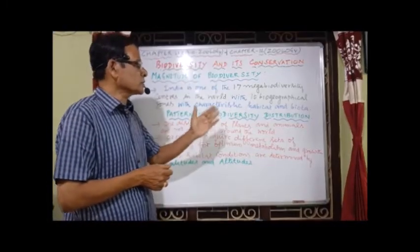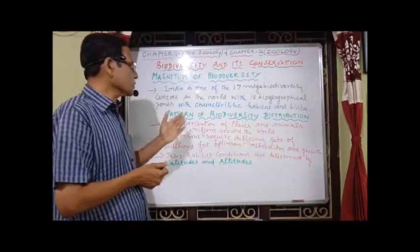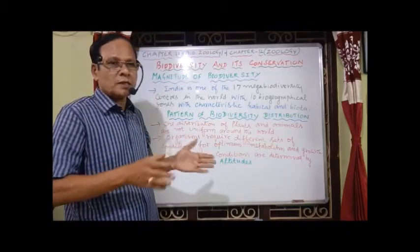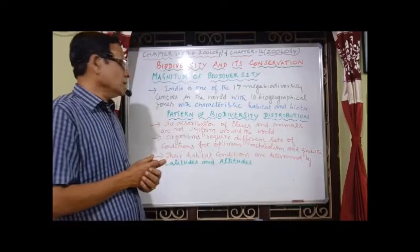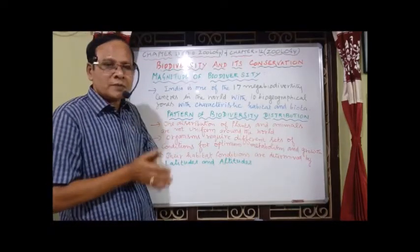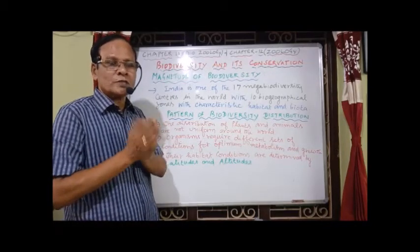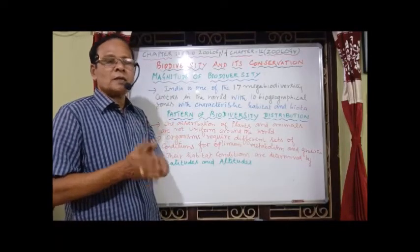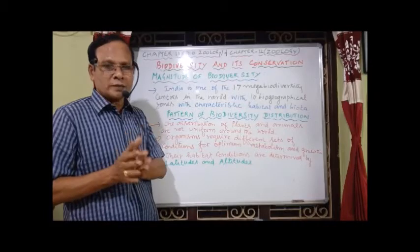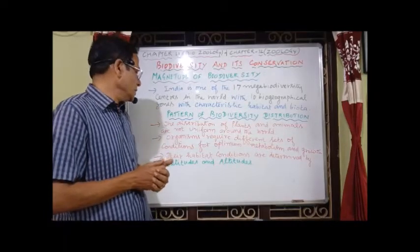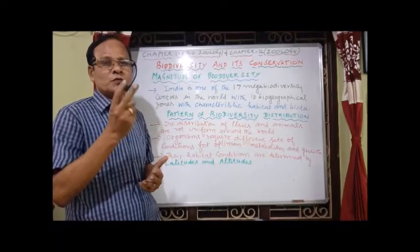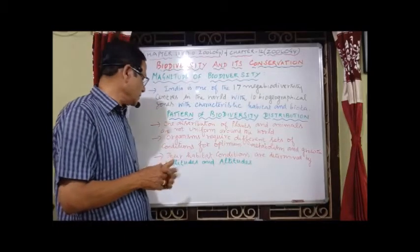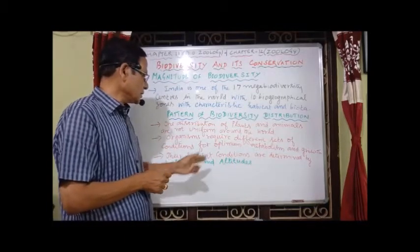The distribution of plants and animals is not uniform around the world — it is unequal and unevenly distributed. Organisms require different conditions for optimum metabolism and growth. The habitat conditions are determined mainly by two factors: latitudes and altitudes.